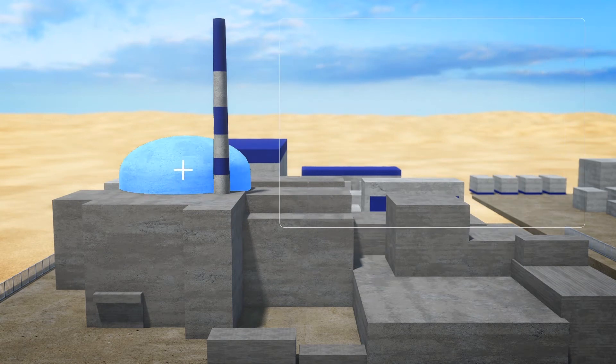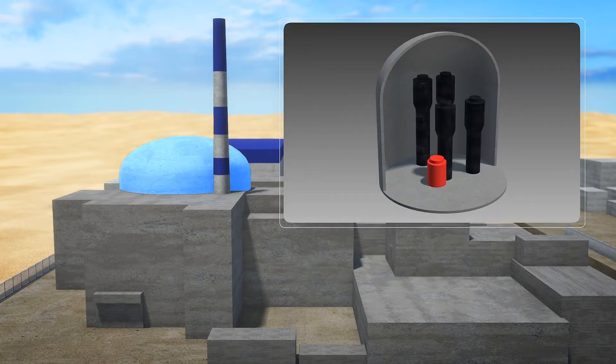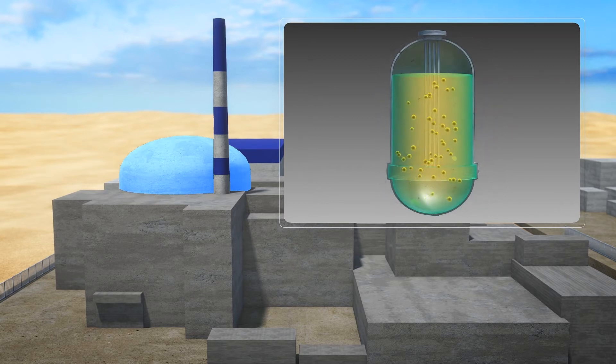While in conventional nuclear plants the fuel is stored inside the fuel rods, in plants with molten salt reactors it is dissolved directly into the molten salt liquid core.